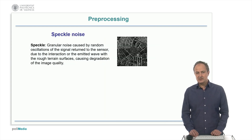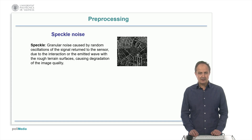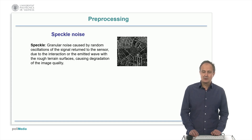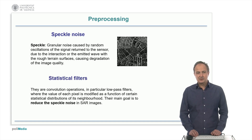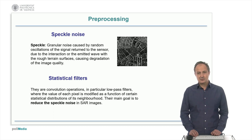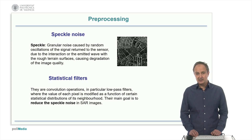The next step usually consists of the reduction of speckle noise, which is caused by random oscillations of the signal returned to the sensor due to the interaction of the wave with rough terrain surfaces, giving a granular aspect to the images. For this purpose, statistical low-pass filters are applied, where each pixel value is modified attending to certain statistical distribution of each neighborhood.